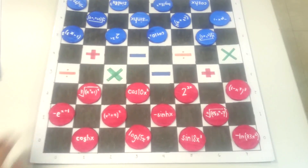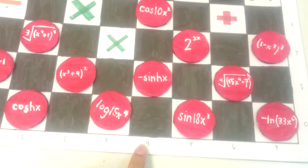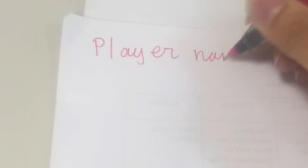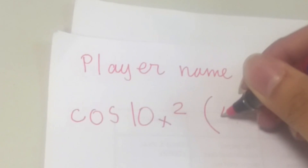Damat notation rules: players are required to record each move, starting from the damat chip up to its coordinates. When recording moves, first write your name, then write the name of the piece, and write the x and y coordinates.